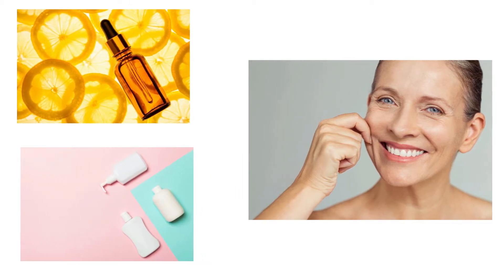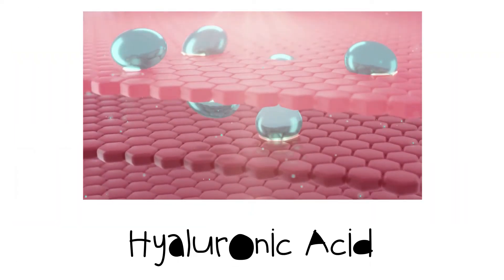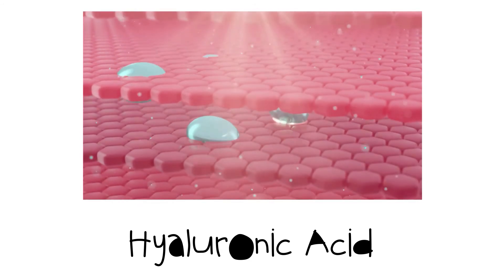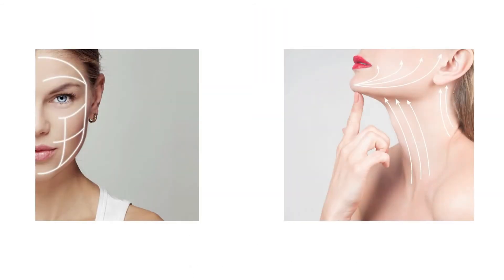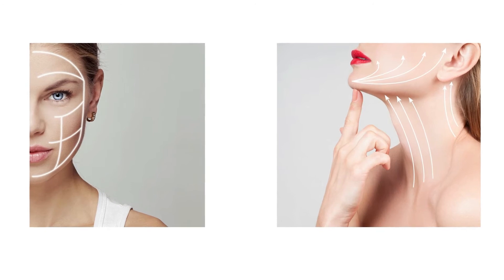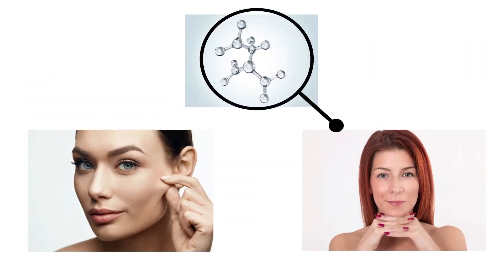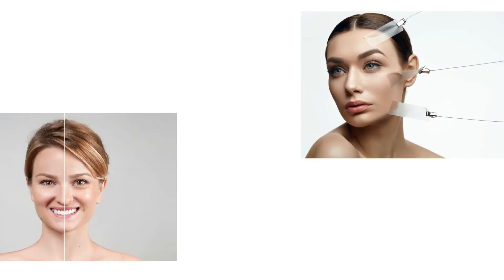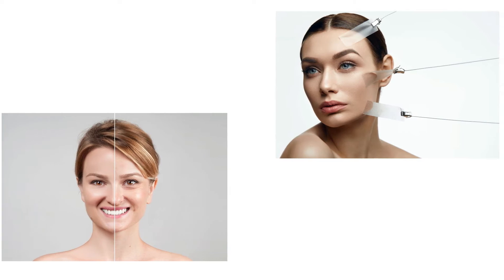Hyaluronic acid has water-binding properties that help keep our skin hydrated and plump. This can reduce the appearance of fine lines and wrinkles. Hyaluronic acid is considered a key ingredient in reducing wrinkles and improving skin elasticity. It can help improve the overall texture of skin and make it appear tighter.